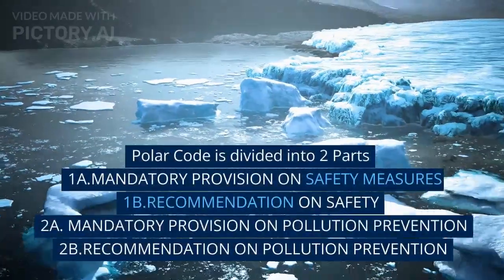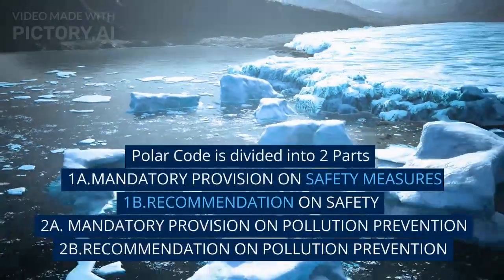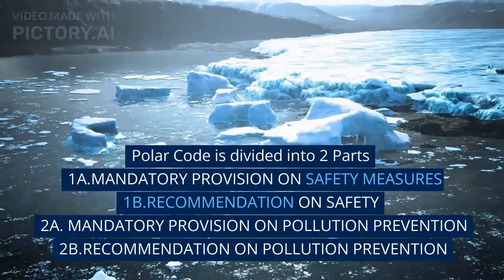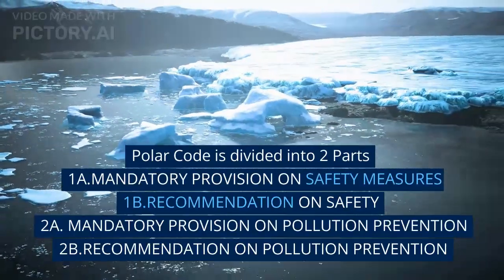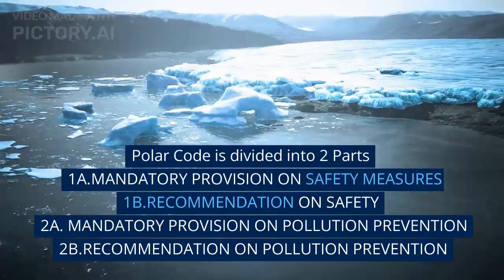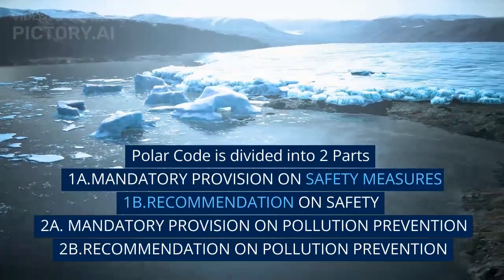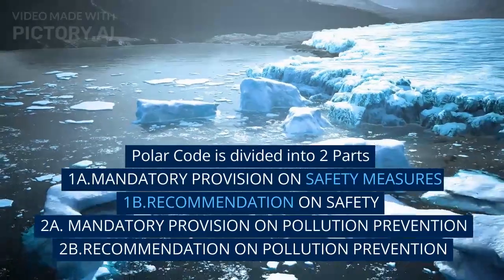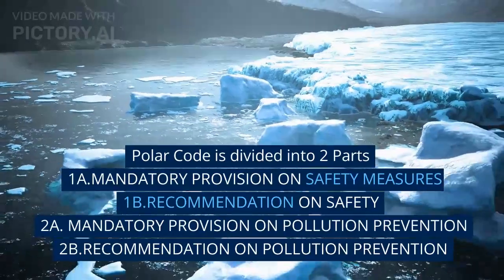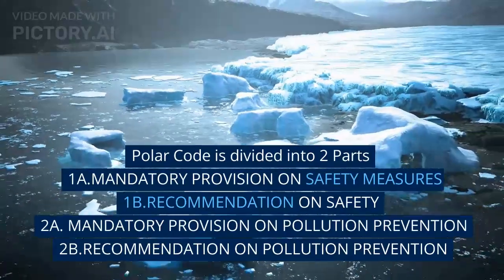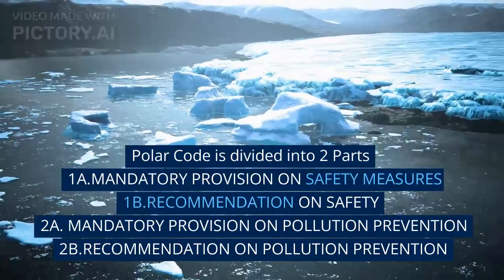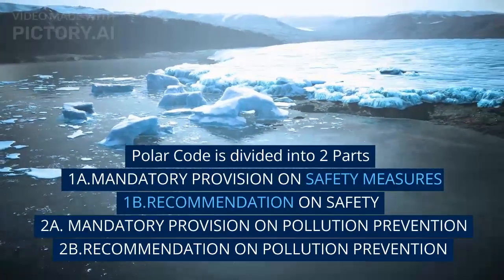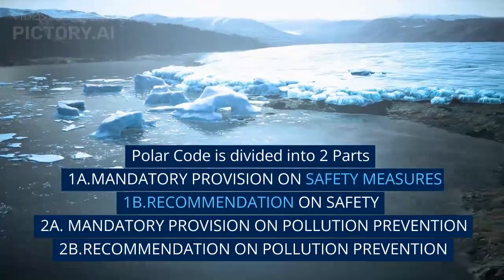The Polar Code is divided into four parts: Part 1A — Mandatory provisions on safety; Part 1B — Recommendations on safety; Part 2A — Mandatory provisions on pollution prevention; and Part 2B — Recommendations on pollution prevention.